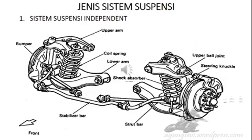Sekarang kita menginjak pada materi. Jenis sistem suspensi pada dasarnya dapat dibedakan menjadi dua jenis: yang pertama adalah sistem suspensi independen, yang kedua adalah sistem suspensi rigid atau kaku. Pada gambar tersebut, itu adalah contoh dari suspensi yang jenisnya adalah independen, yang modelnya adalah wishbone pegas coil.